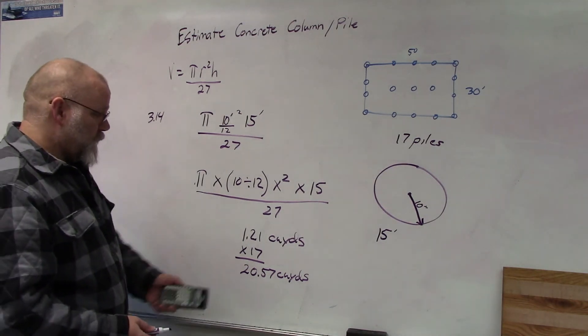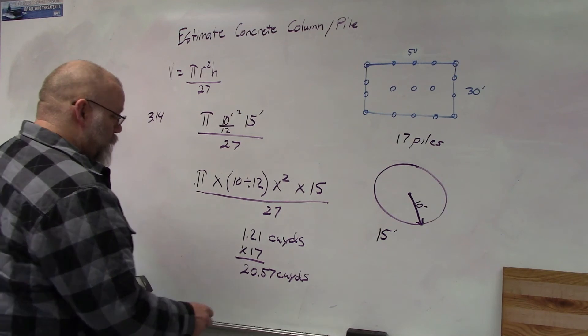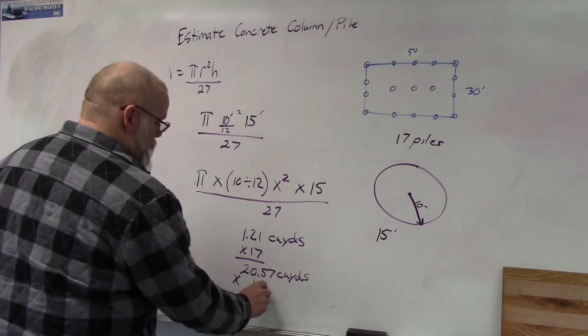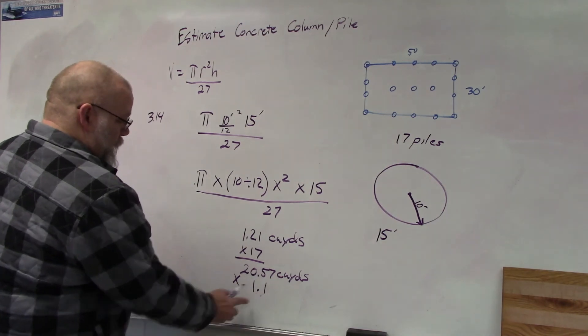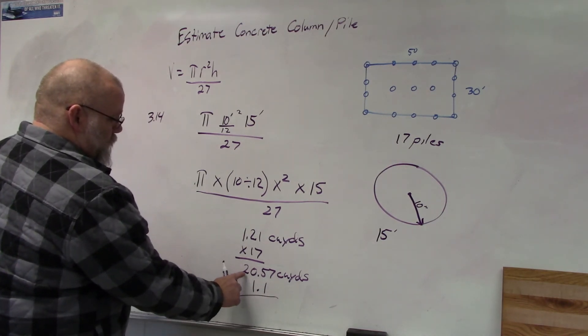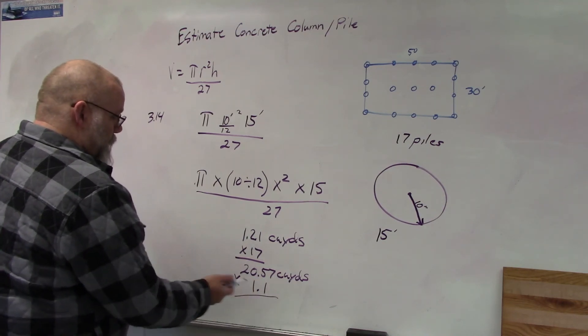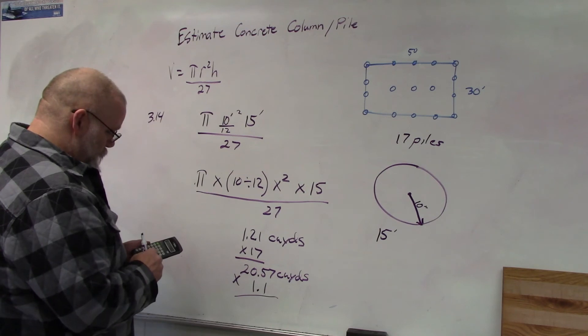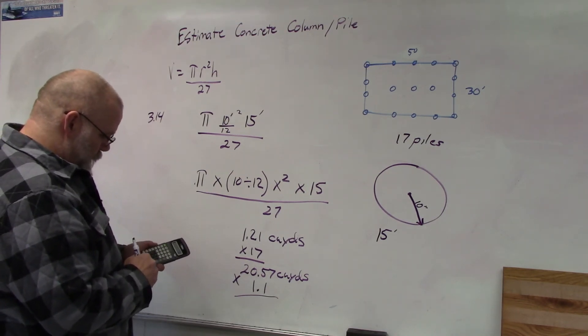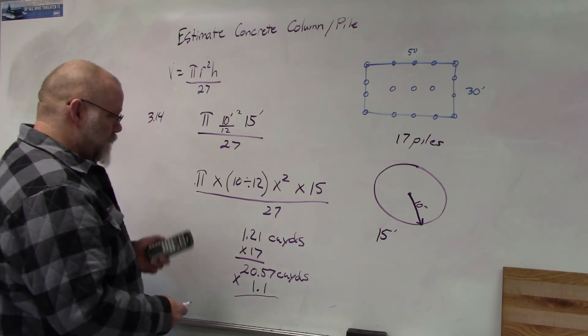Then, of course, with concrete, we always want to add some for waste, so we're going to multiply it times 1.1, which is 10% waste. So 1 is the 20.57, and the 0.1 is the waste.